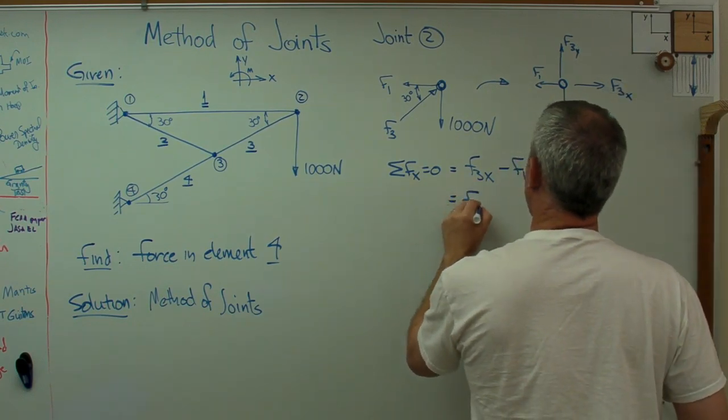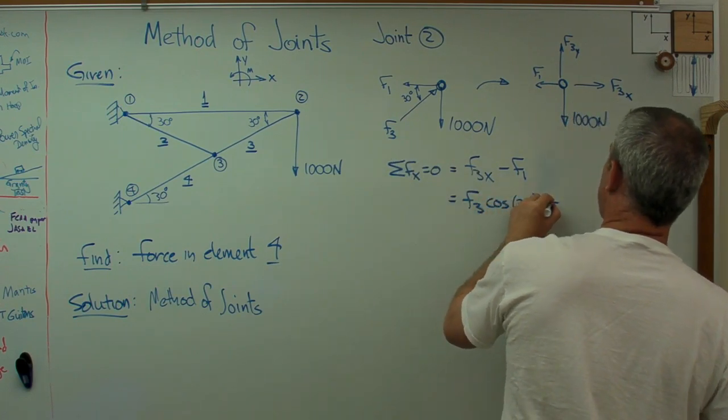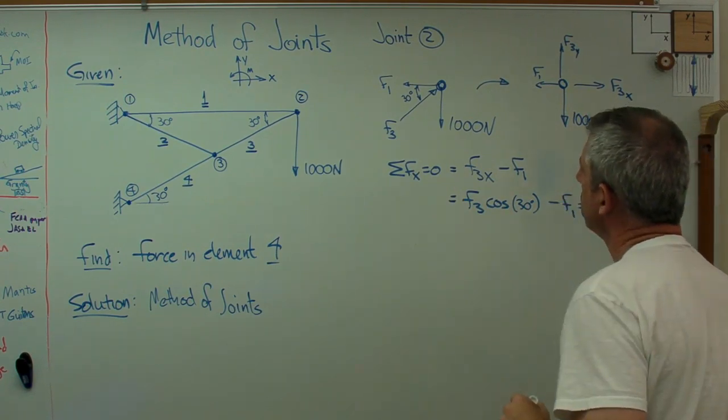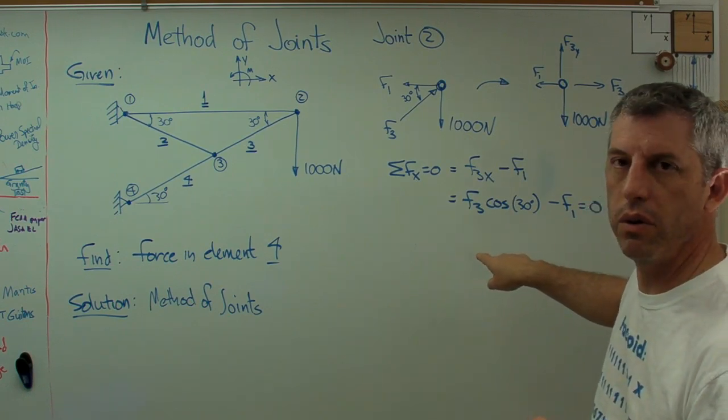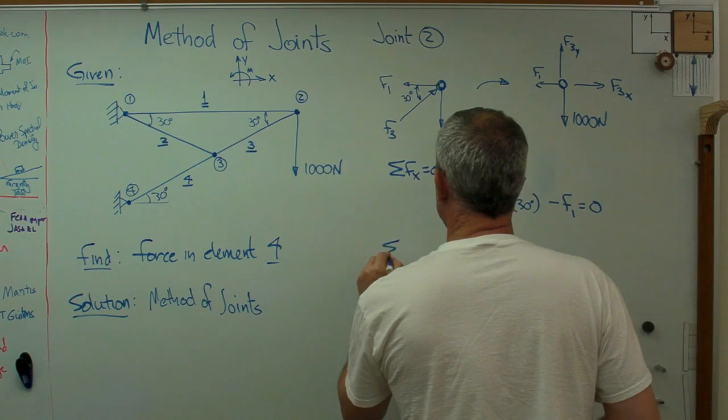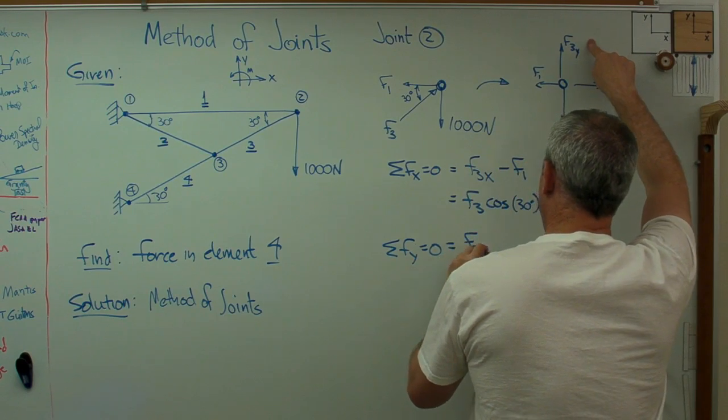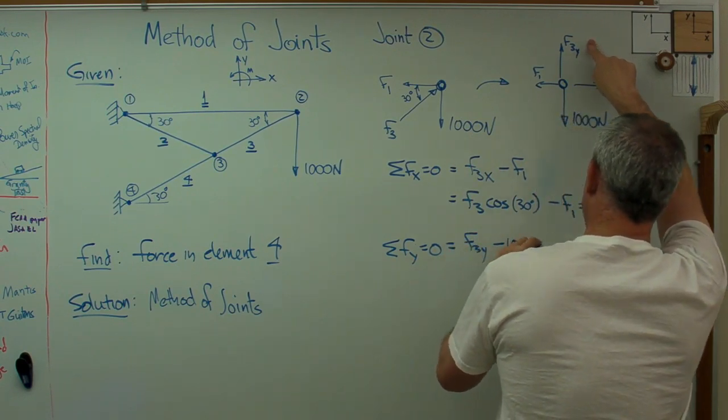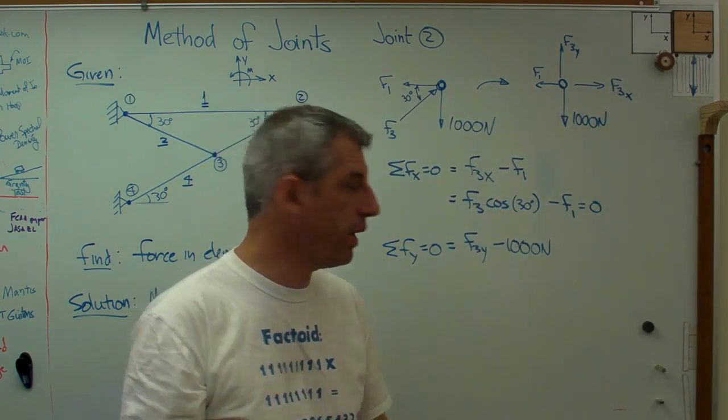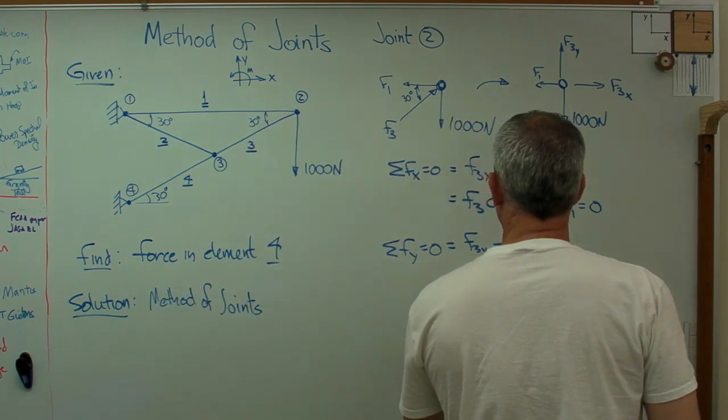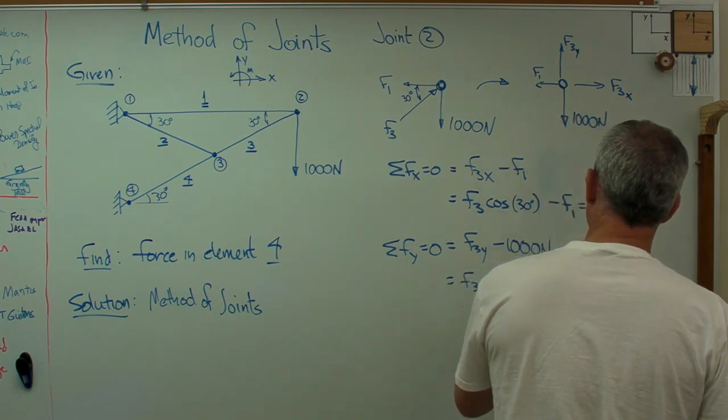I'm going to say F3x minus F1 equals zero. F3x is just going to be F3 cosine 30 degrees minus F1 equals zero. I've got two unknowns and one equation, so clearly I'm going to need the other equation. That's going to be F3y positive minus 1,000 newtons. Now I've got one equation and one unknown. I'm going to be able to solve for F3 because F3y is F3 sine 30 degrees minus 1,000 newtons.